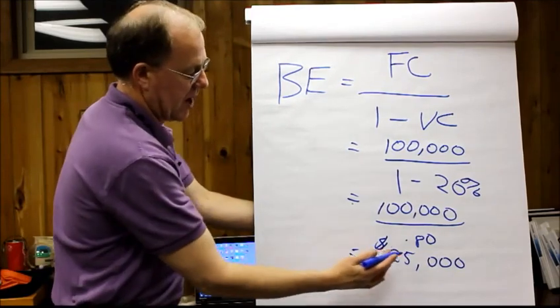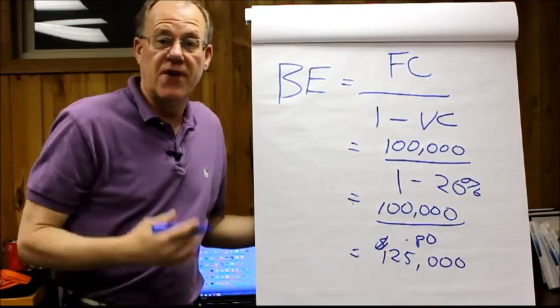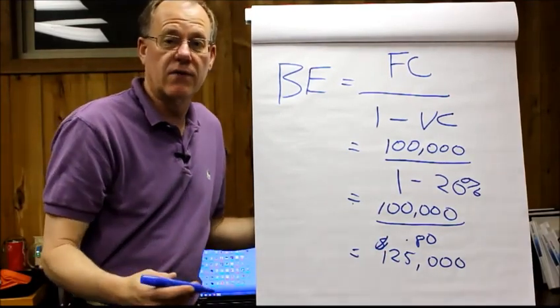If you have an average dollar sale of $500 you're going to have to sell 250 of those items to break even.